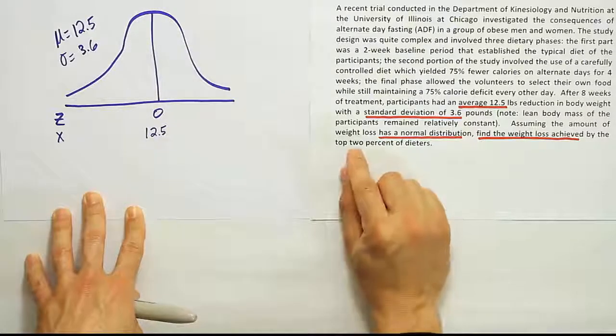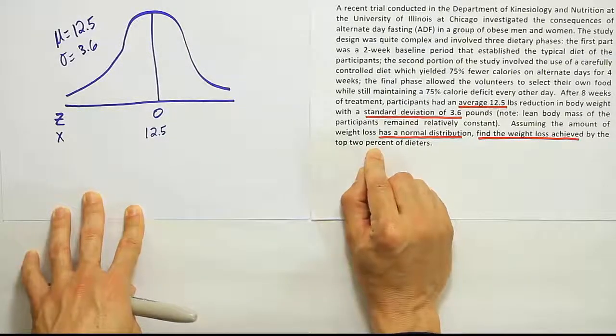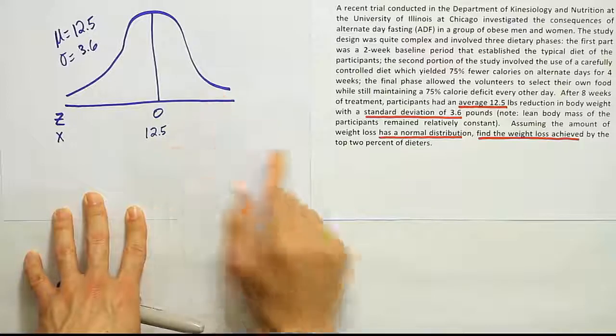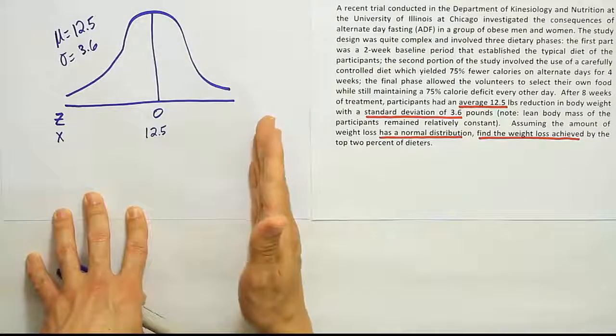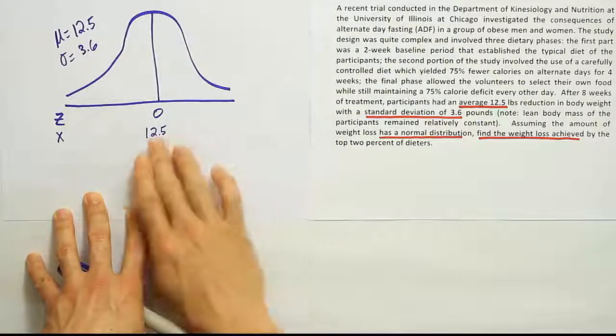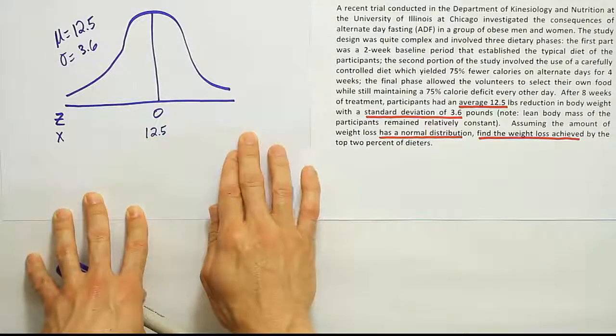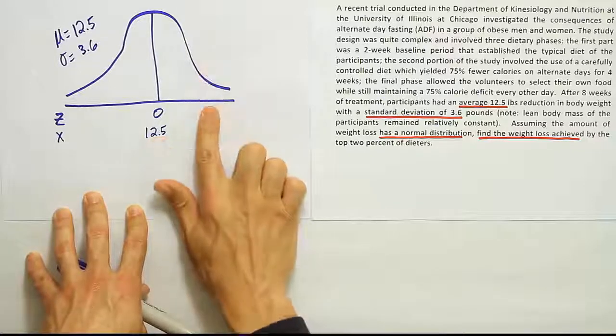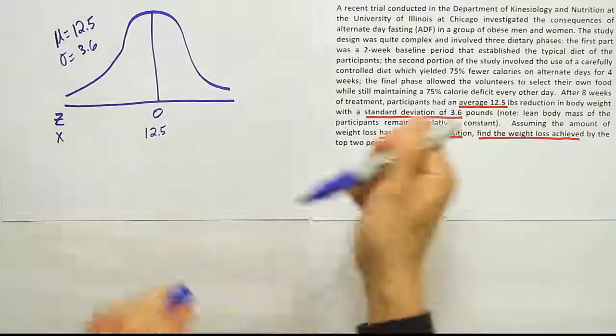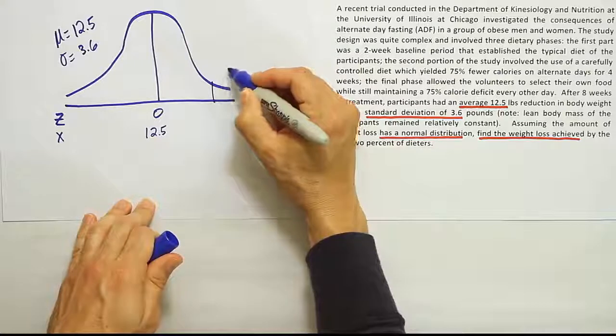This little piece here would be the 2% that we're looking for. Is it correct to say that this would be the top 2%? I think it would be, right? Because this is the top half of the curve. The weight loss here would be above 12.5 pounds. These would be the higher amounts of weight loss that were achieved. So if I put a cut here, that should represent the place where the top 2% resides.